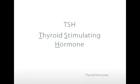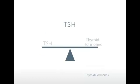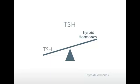TSH — thyroid stimulating hormone — stimulates thyroid cells to increase their production of thyroid hormones. There's a seesawing effect between TSH and thyroid hormones. If thyroid hormone production increases, as in hyperthyroidism, TSH goes down to slow stimulation. And if thyroid hormone production goes down, TSH in the blood goes up in its attempt to stimulate thyroid cells to make more thyroid hormones.